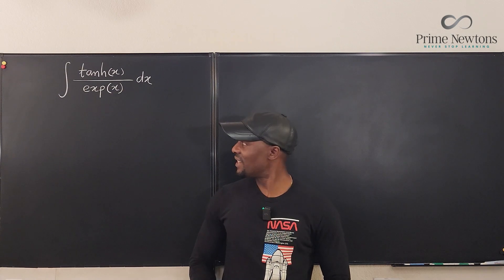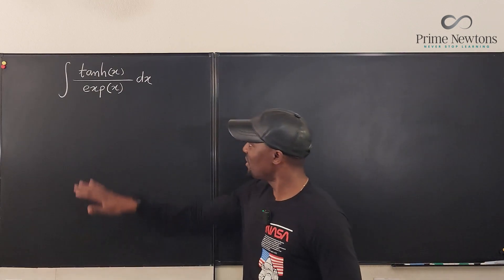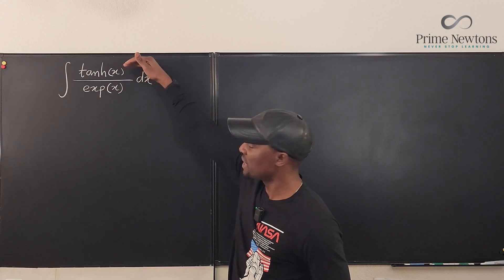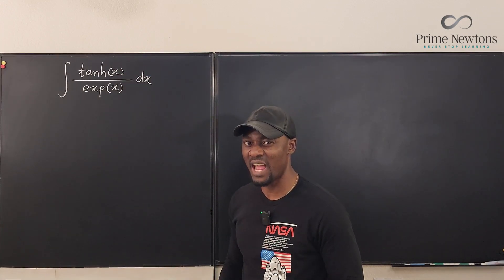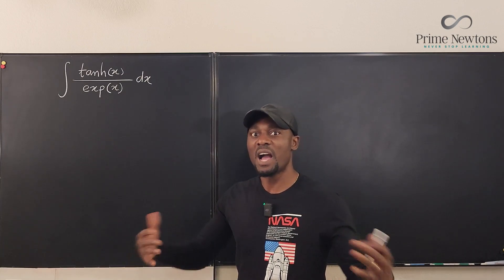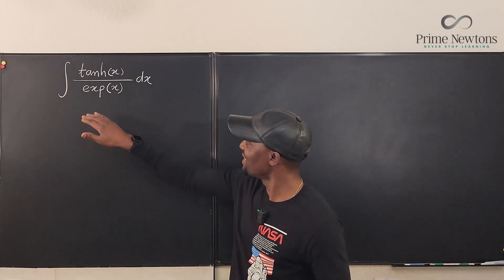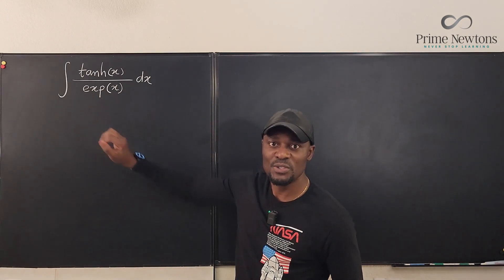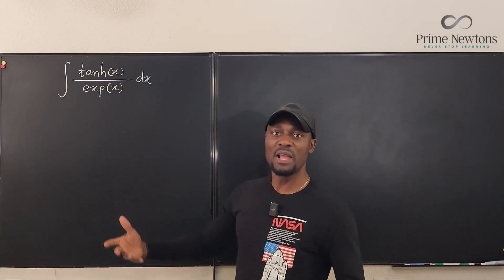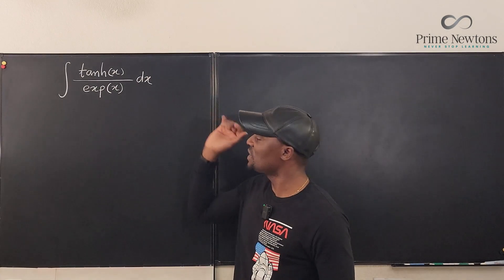Welcome to another video. Let's do another quick integral that's exciting. Here we have the hyperbolic tangent, which I call tanh x. Some people say it's tanx, but we'll just say hyperbolic tangent. And this is e to the x, but MIT has chosen to write it as exponential function of x, which is the same thing. And we need to integrate this.